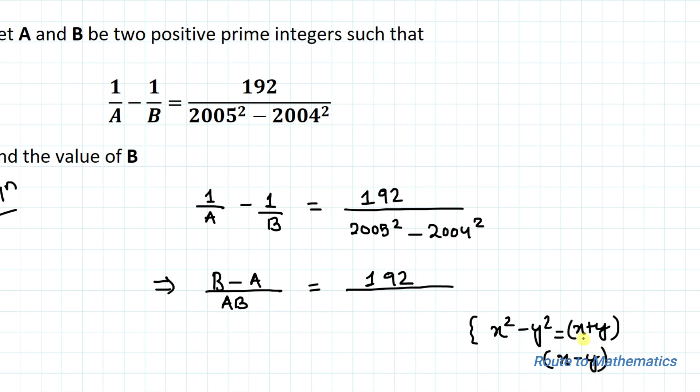Let's assume x = 2005 and y = 2004. So we can write (2005 + 2004)(2005 - 2004).